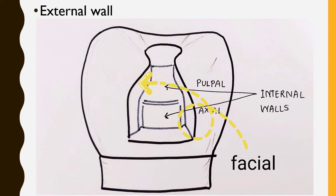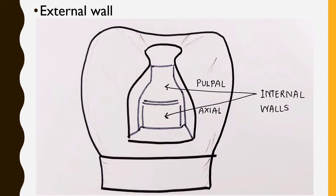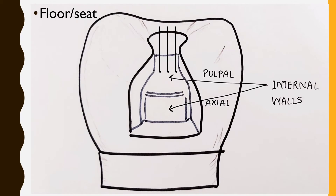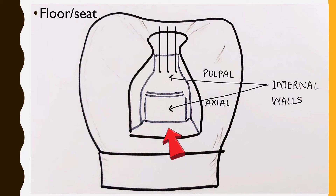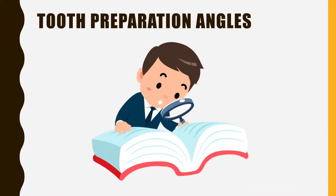An external wall is one that extends to the external tooth surface — it is called facial, lingual, or distal depending on the tooth surface it is towards. A floor or seat is a prepared wall that is flat and perpendicular to the long axis of the tooth, like the pulpal floor and the gingival seat. It is made flat purposefully so that masticatory stresses are evenly distributed, giving stability to the restoration.